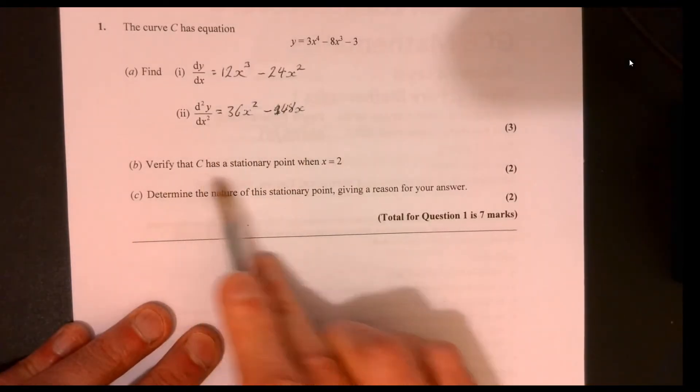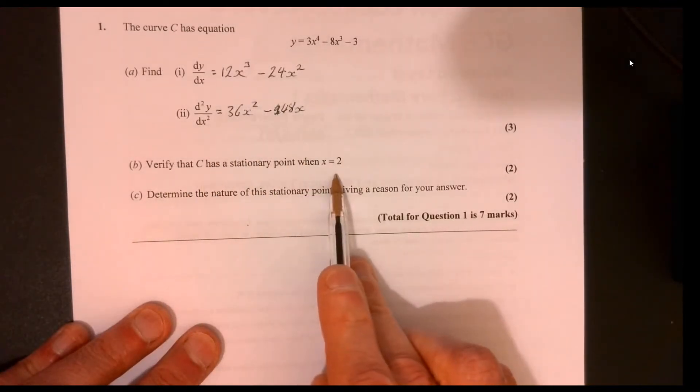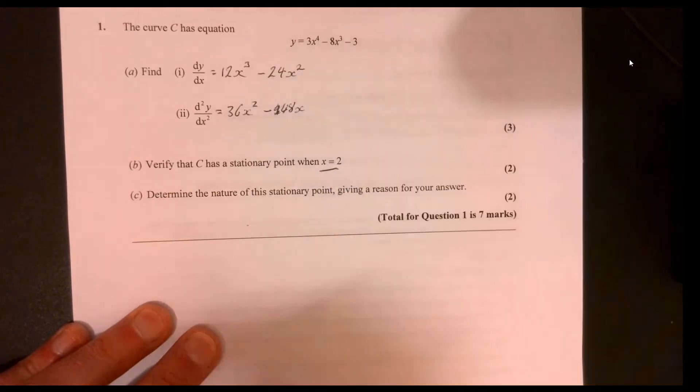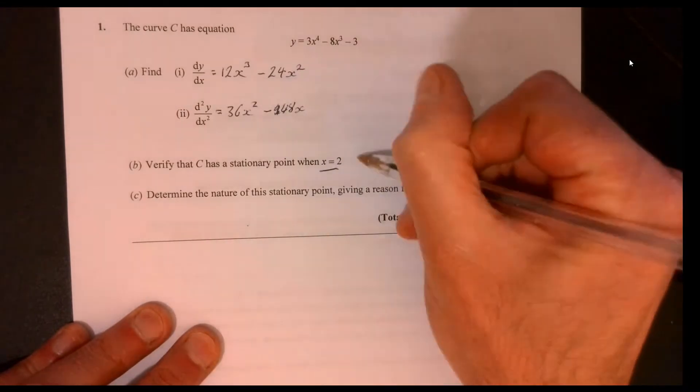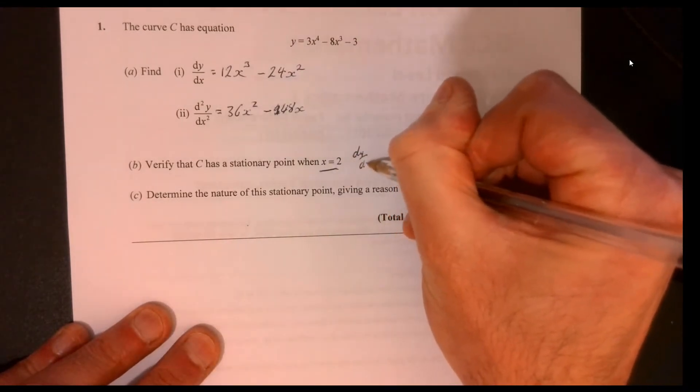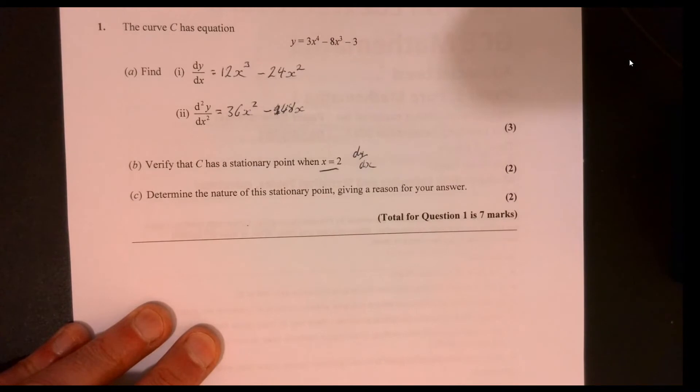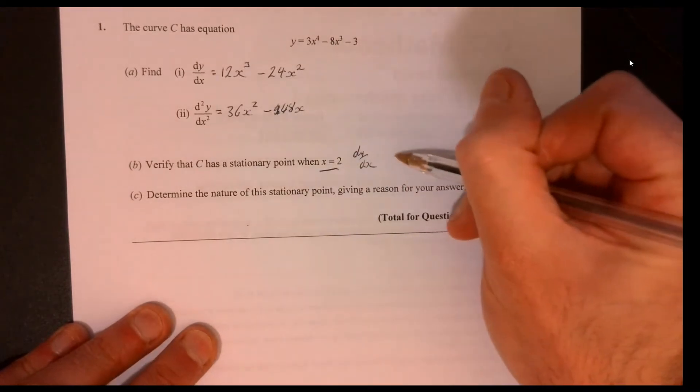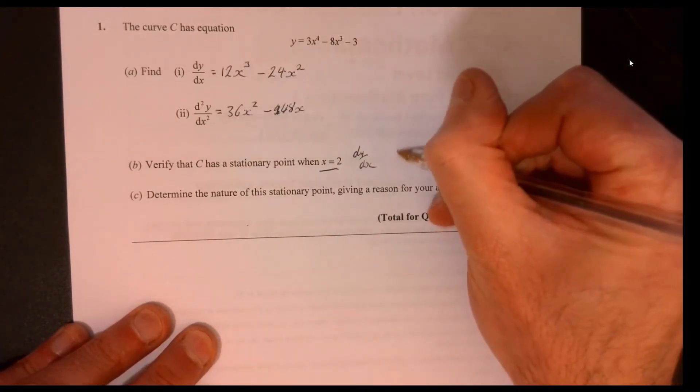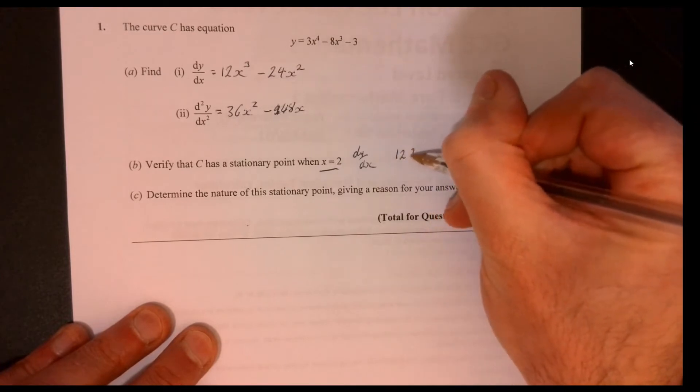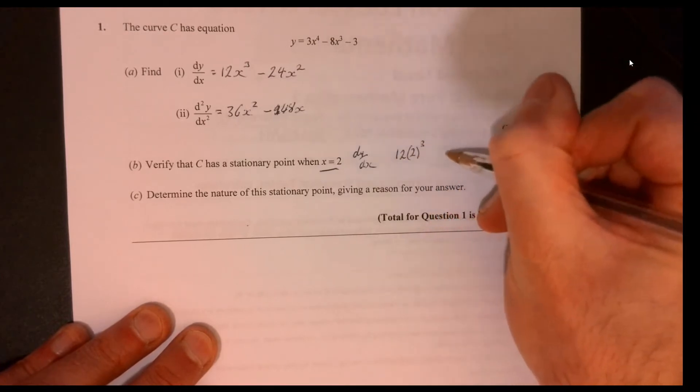So, verify that C has a stationary point when x equals 2. All that means is just sub in x equals 2 into dy over dx. So let's sub it in, see what happens. You've got 12 times 2 cubed,